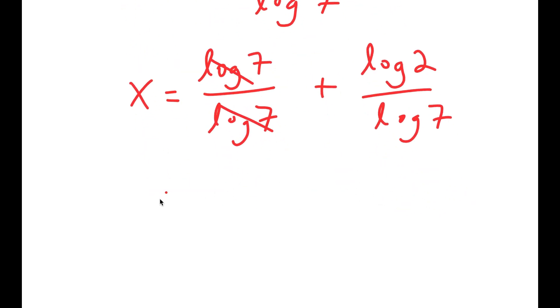So now these two cancel out, and I get x is equal to 1 plus log 2 over log 7.